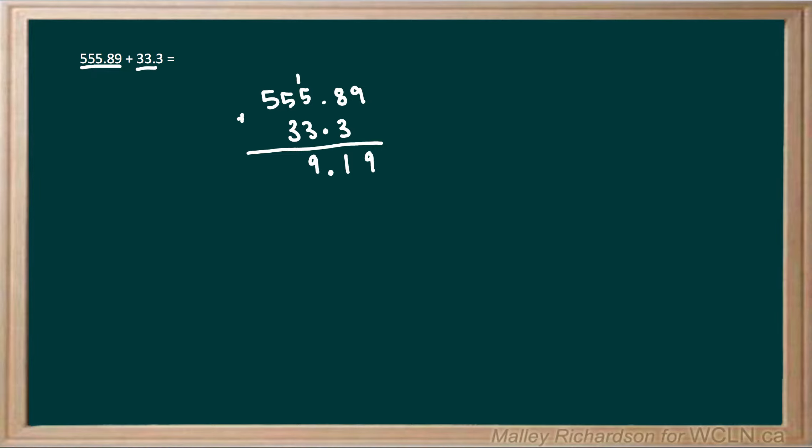And next we move on to this 5 plus 3, which gives us 8. So we bring the 8 right down below here. And then we're left with this 5 plus nothing, which just leaves us with 5. So our final answer is 589.19. So 555.89 plus 33.3 gives us 589.19.